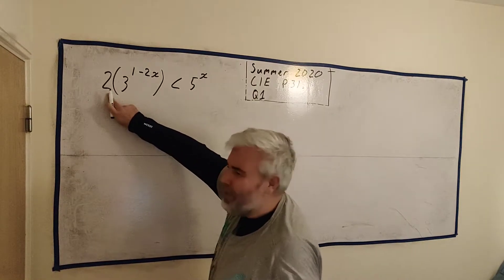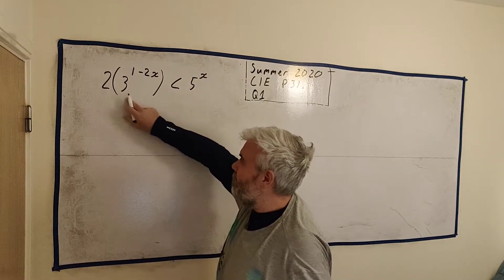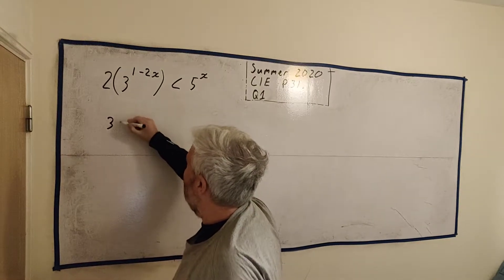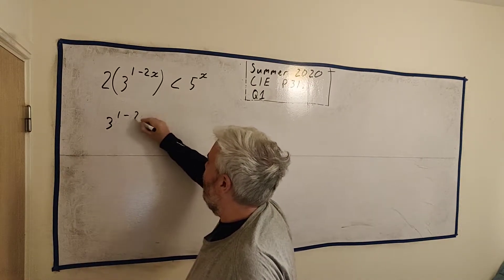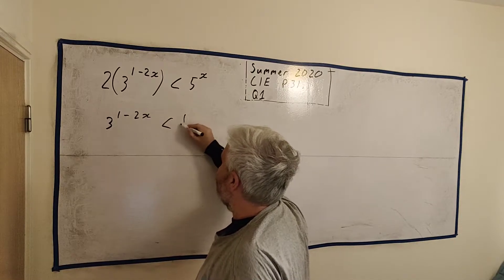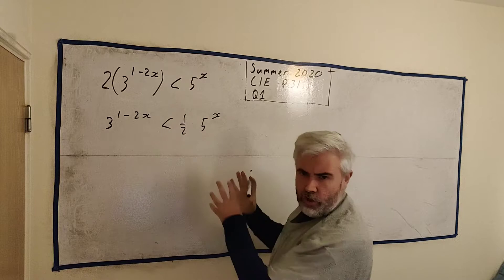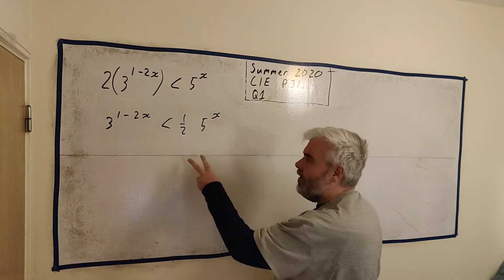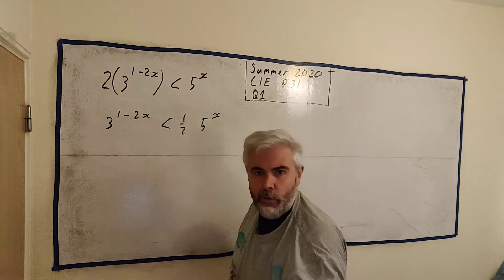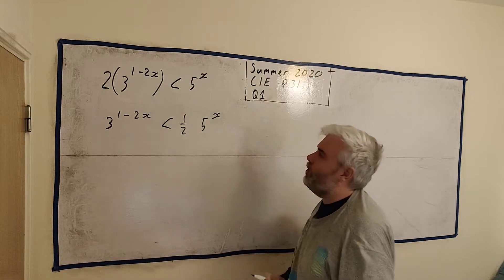Well the first thing I'll do is I'll get rid of this 2. This 2 is in my way to get the logarithmic of this. So I'm going to rewrite this as 3 to the power of 1 minus 2x is less than a half 5 to the power of x. Every time I do something to this equation, I am going to think, am I allowed to do it to an inequality? You have to be careful when it comes to inequalities.